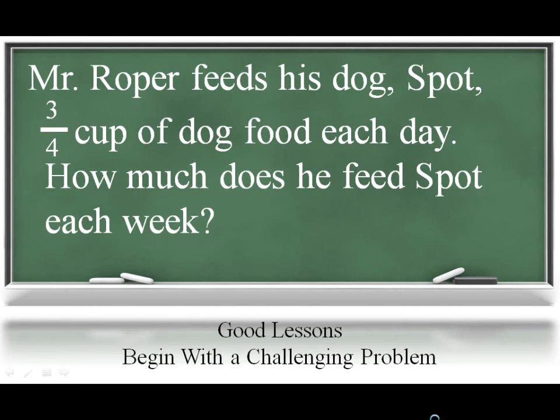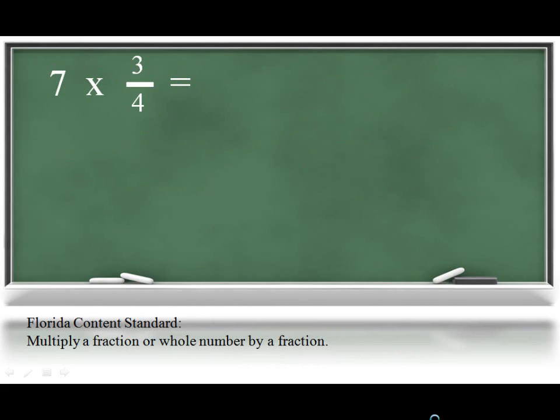If Spot will be given 3 fourths of a cup of food each day, then the student would have to find 7 groups of 3 fourths of a cup, or 7 times 3 fourths of a cup. Your child may estimate by understanding that 3 fourths is almost a whole, and 7 groups of a whole would be about 7 cups of food for good old Spot.